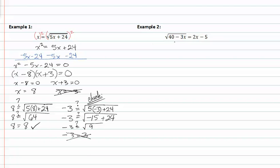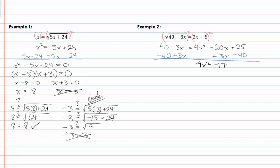In the second example, we're going to raise both sides of the equation to the second power to perform the opposite operation and get rid of the radical sign. Now we have 40 - 3x = 4x² - 20x + 25. Remember it's important to foil this before you go any further. Subtracting 40 from both sides and adding 3x to both sides, I now have 4x² - 17x - 15 = 0.